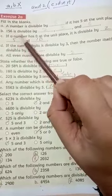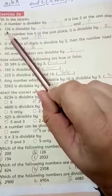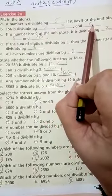156 is divisible by dash, dash and dash. 156 is divisible by 2, 3 and 6.